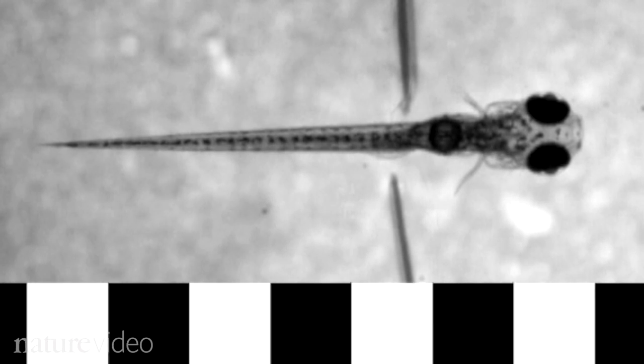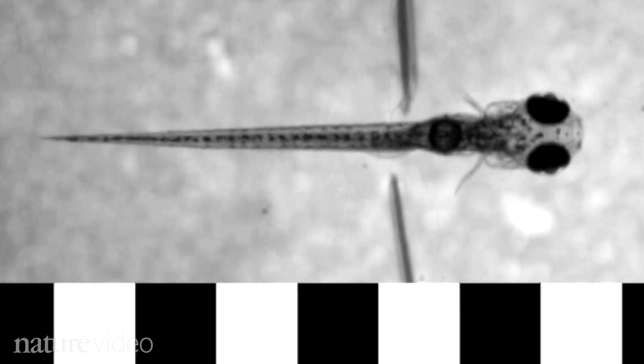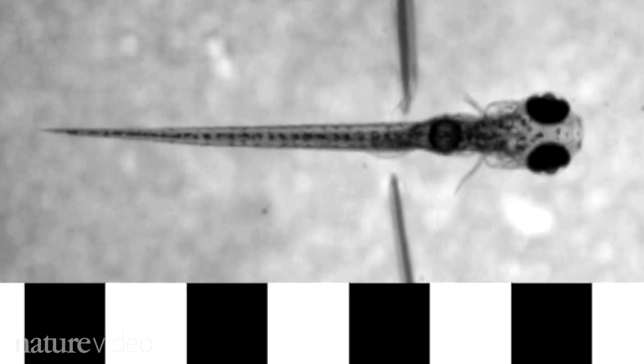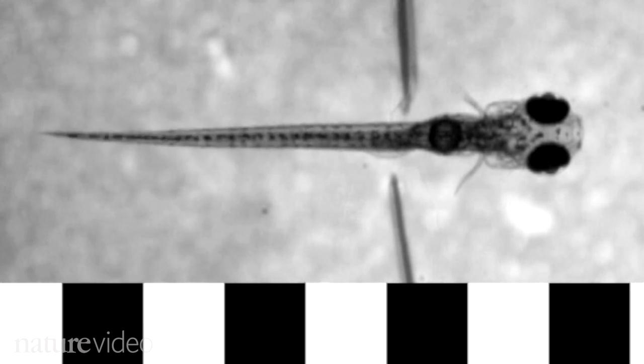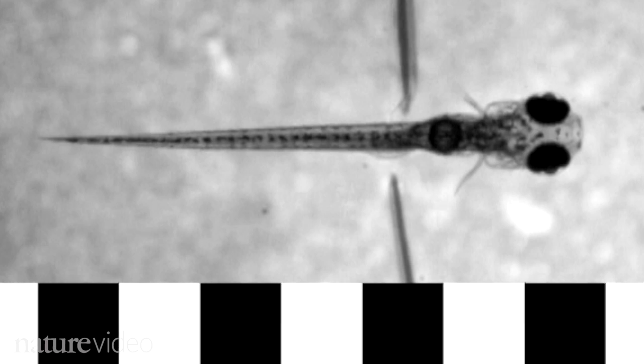To a zebrafish, the repeating lines are currents in a river. As the lines fly past, the fish frantically flicks its tail to counter the current. Florian Engert and his team at Harvard are using zebrafish and The Matrix to learn about the brain.